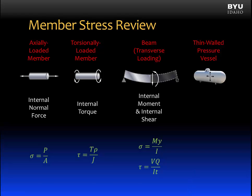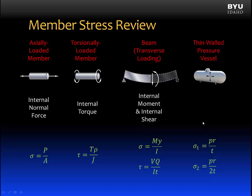For thin-walled pressure vessels, we find normal stress in two directions in the vessel wall. For a cylindrical pressure vessel, the hoop stress sigma-1 equals pressure times the internal radius divided by the wall thickness. In the axial direction, the stress is half that, given as sigma-2 = PR over 2T. For spherical pressure vessels, the stress in any direction equals sigma-2. In this lesson, we will consider members subjected to two or more of these conditions and calculate stress at a point under various internal resultant forces.